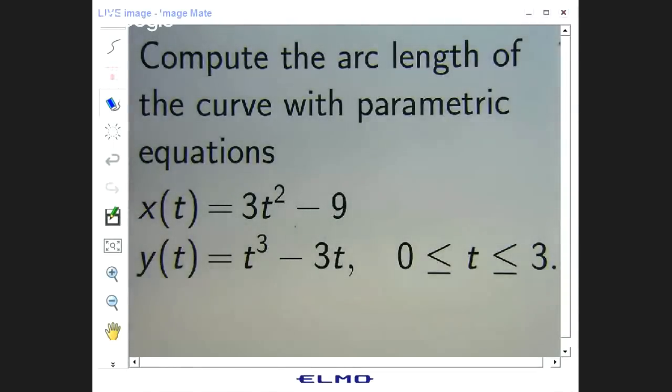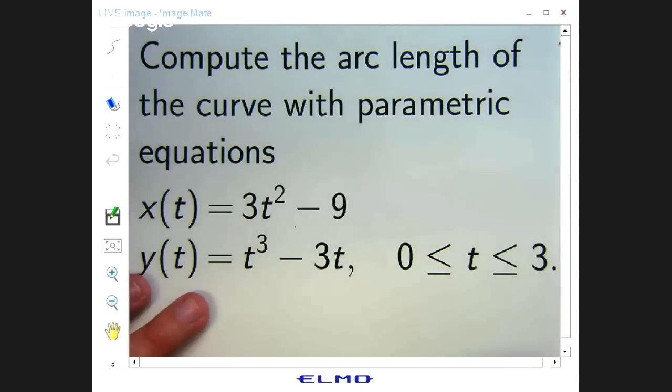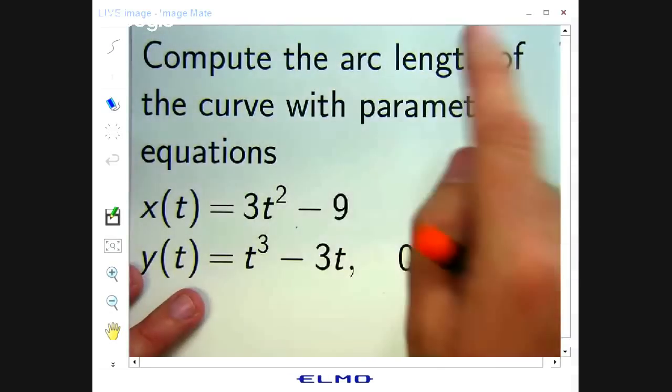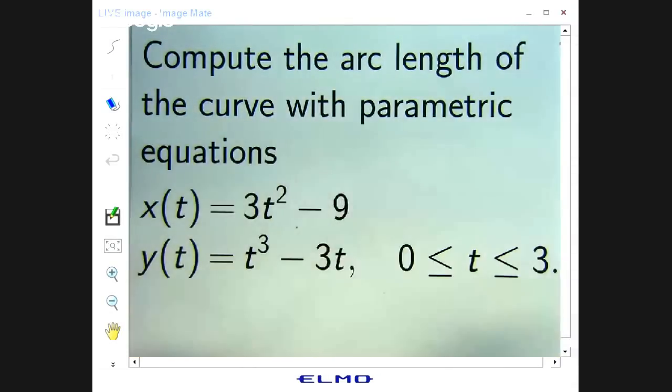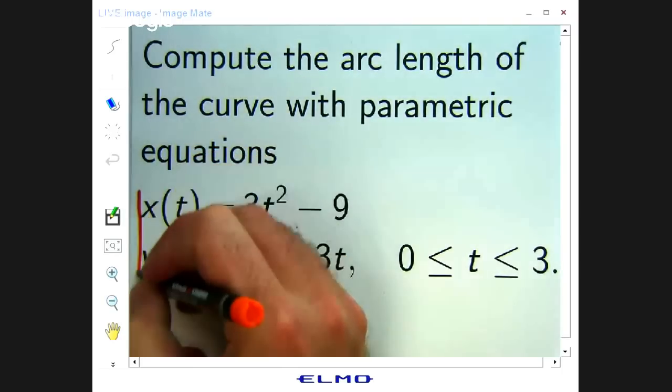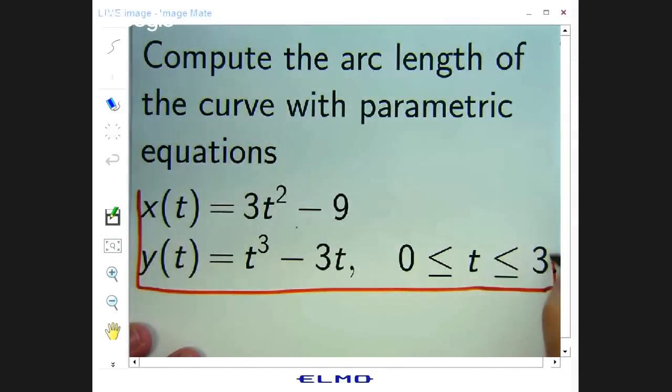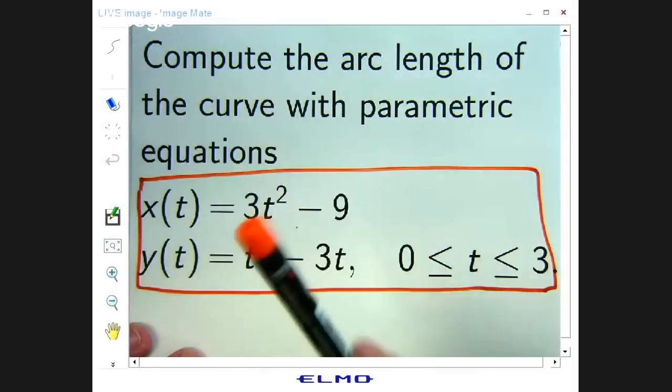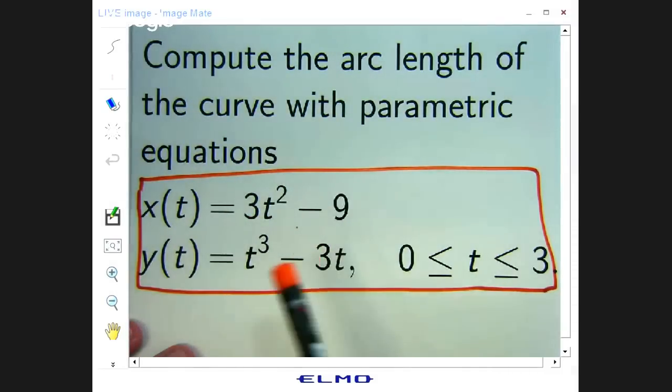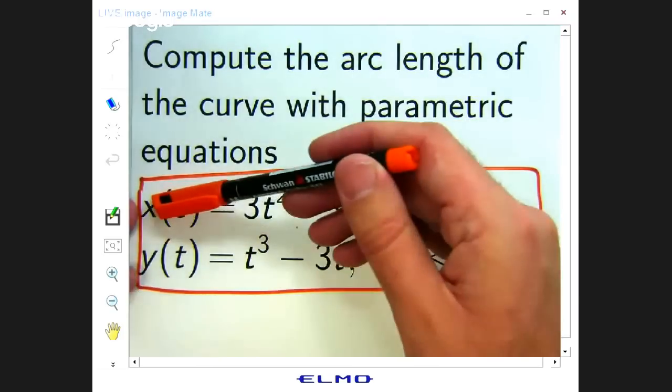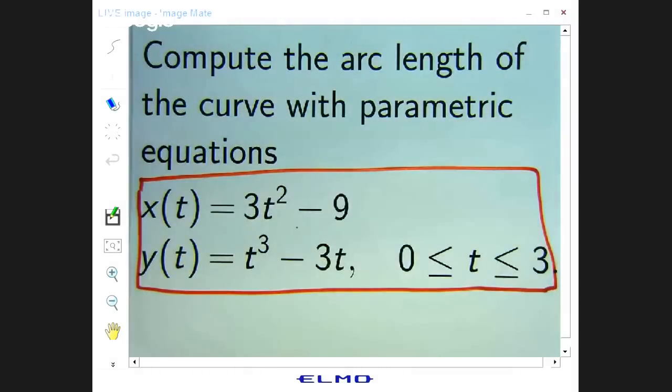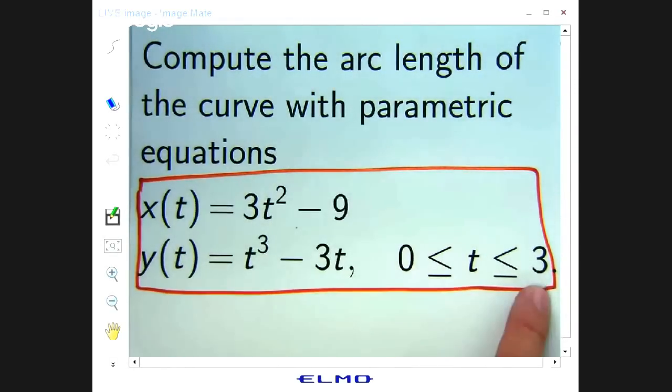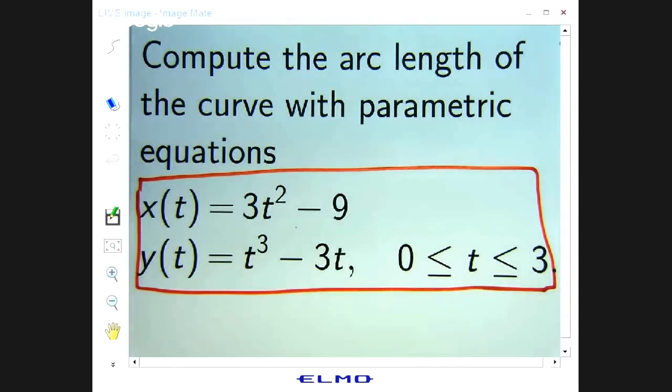Here is the example we're going to talk about. We are asked to compute the arc length or the length of the curve with the following parametric equations. So here T is a parameter and that gives for each value of T you get a coordinate in the xy plane. And when you move say from T from 0 to 3 then you get part of a curve.